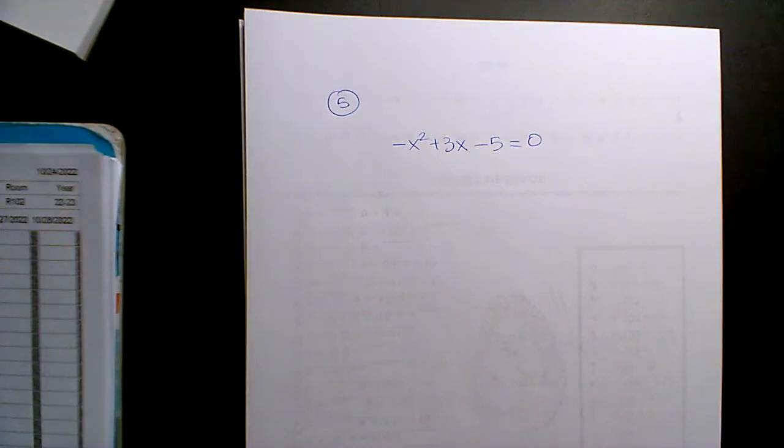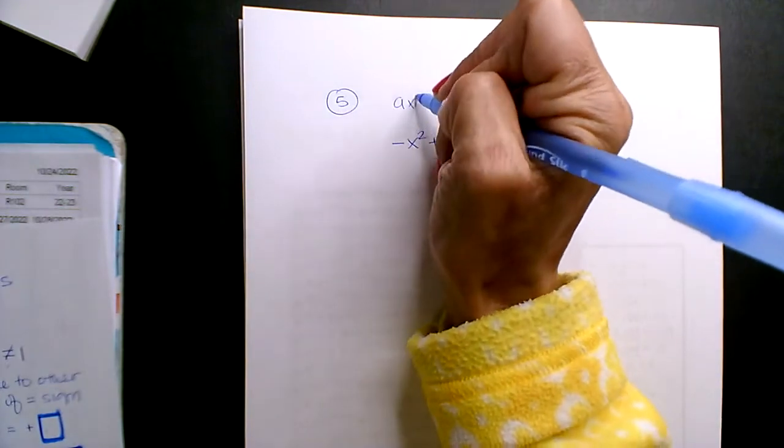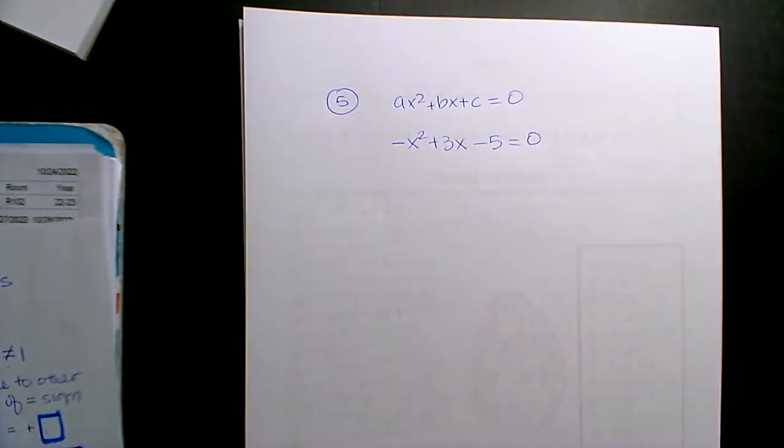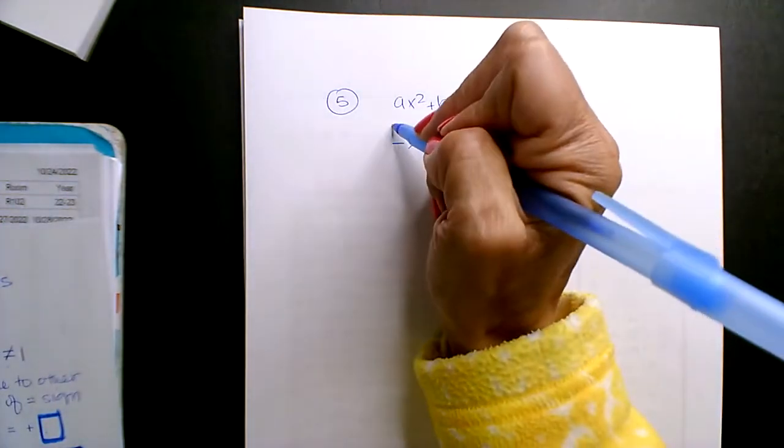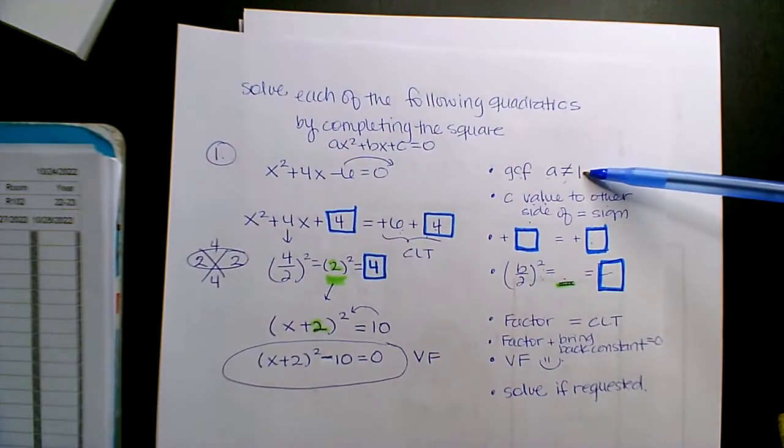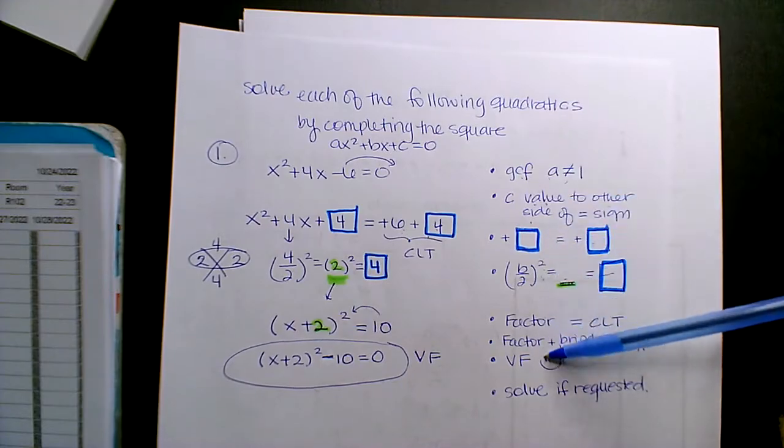So this one, the A value, remember it's AX squared plus BX plus C, and of course we're saying it equal to 0 because we're completing the square. But the A value here is negative 1. Remember, if the A value is not positive 1, then we have to GCF that out, and then the rest of the steps will follow.